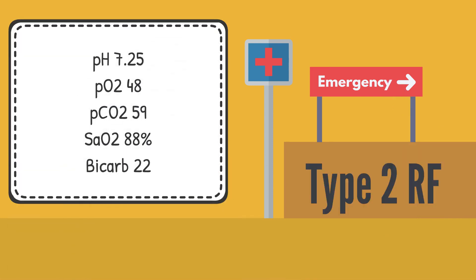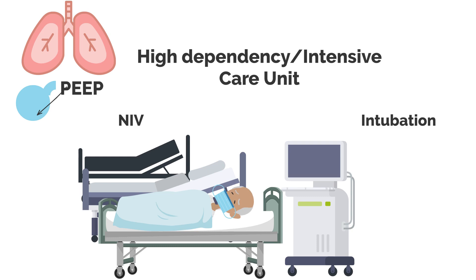If you have done an arterial blood gas on your patient and the results show hypoxemia, hypercarbia, and acidemia, and the patient has not responded to initial treatment with IV diuresis, this patient should be offered high dependency care or intensive care if a suitable candidate. In the critical care unit, patients would be offered non-invasive ventilation in the form of BiPAP or CPAP, or invasive ventilation. The common thread between these different modes of ventilation is to provide a positive end-expiratory pressure, also known as PEEP. PEEP works by recruiting collapsed alveoli, opening up the airways, and redistributing liquid within the lungs, thereby increasing the partial pressure of oxygen in the blood and reducing the ventilation-perfusion mismatch.